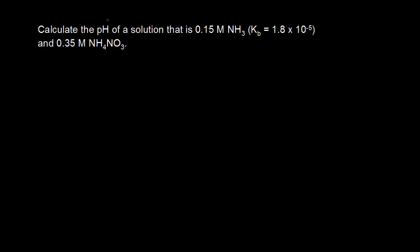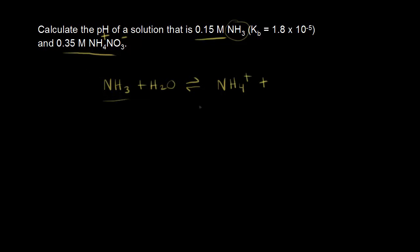Let's do another common ion problem. This time we need to calculate the pH of a solution that is 0.15 molar for ammonia and 0.35 molar for ammonium nitrate. Ammonium nitrate is NH4 plus and NO3 minus in solution. Ammonia is a weak base, and it's going to take a proton from water. So if NH3 picks up an H plus, we form NH4 plus, or ammonium. And if we take an H plus away from H2O, we form OH minus, or the hydroxide ion.